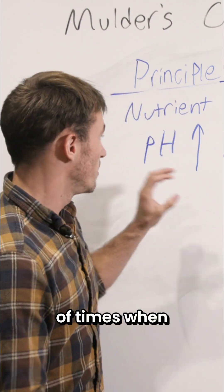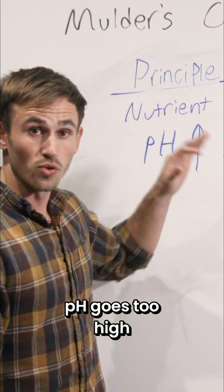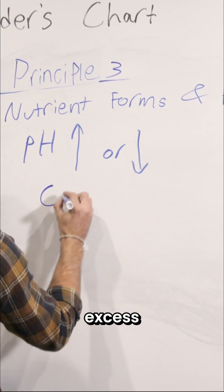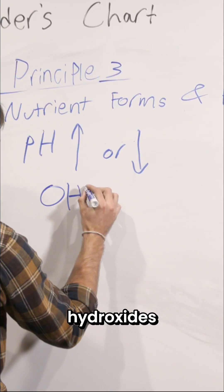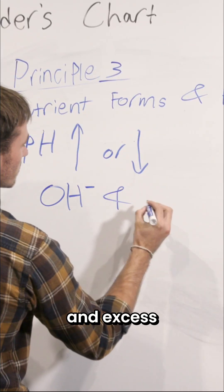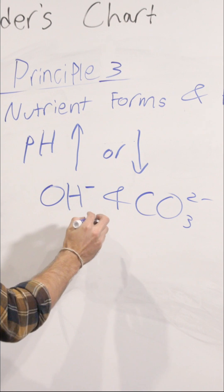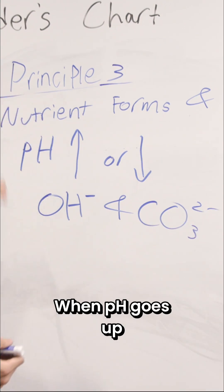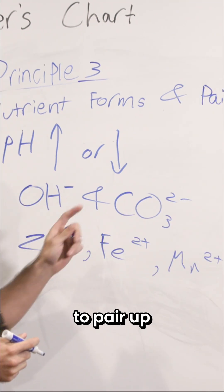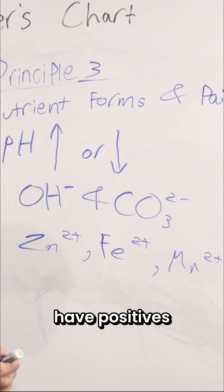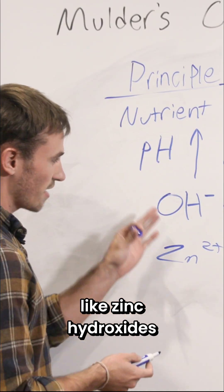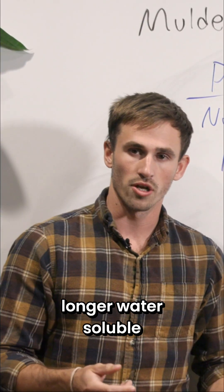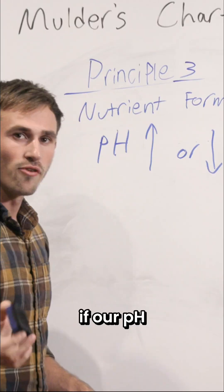When pH goes too high, what we have in our soil are excess hydroxides, which have a minus charge, and excess carbonates, which have a two minus charge. When pH goes up, they're going to pair up with our nutrients that have positive charges, and they'll create things like zinc hydroxides, which are no longer water soluble and able to be taken up by the plant.